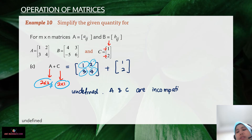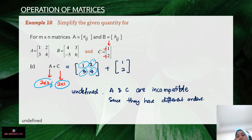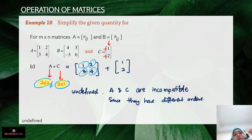Matrices A and C are incompatible with each other since they have different orders. It is very important to identify the order of each matrix before doing any operation.